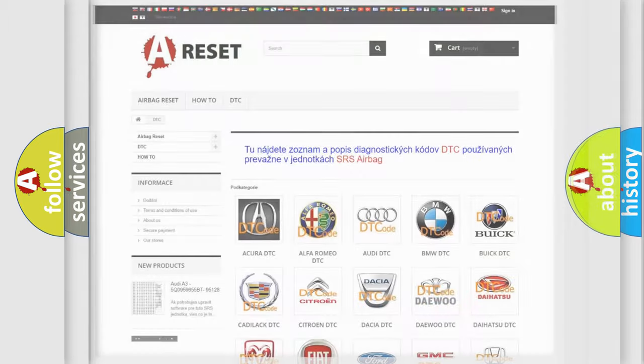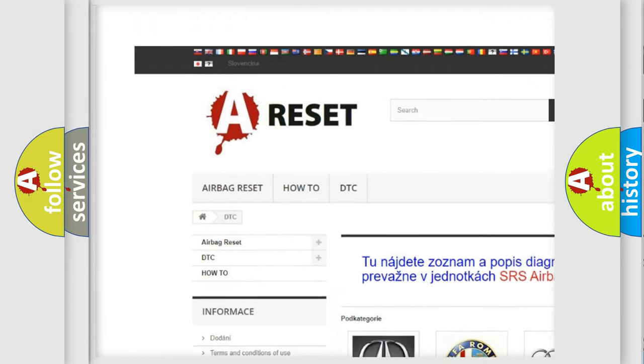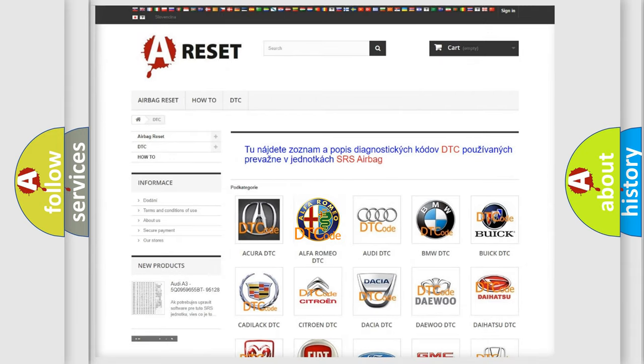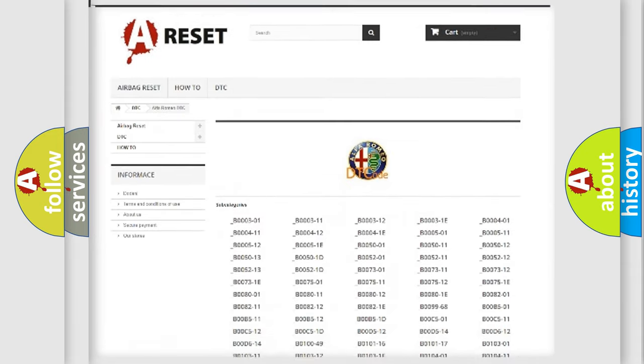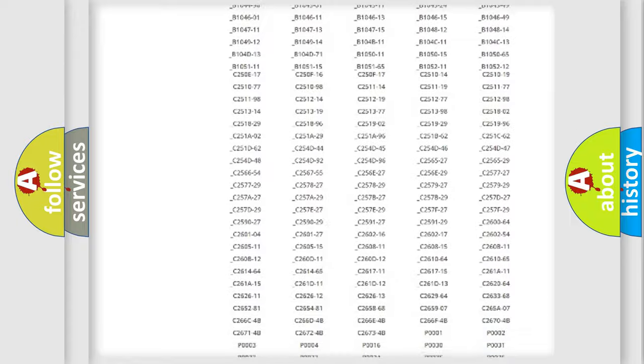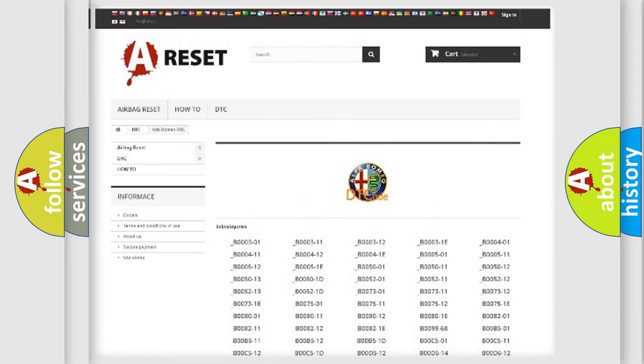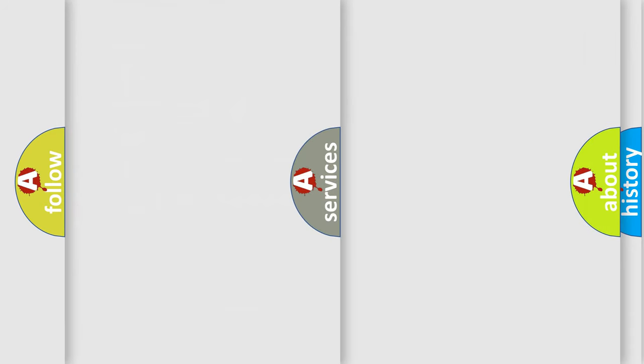Our website airbagreset.sk produces useful videos for you. You do not have to go through the OBD2 protocol anymore to know how to troubleshoot any car breakdown. You will find all the diagnostic codes that can be diagnosed in Alfa Romeo vehicles, also many other useful things.